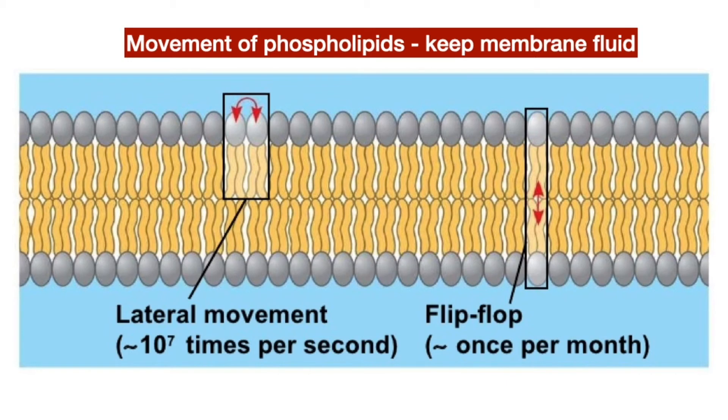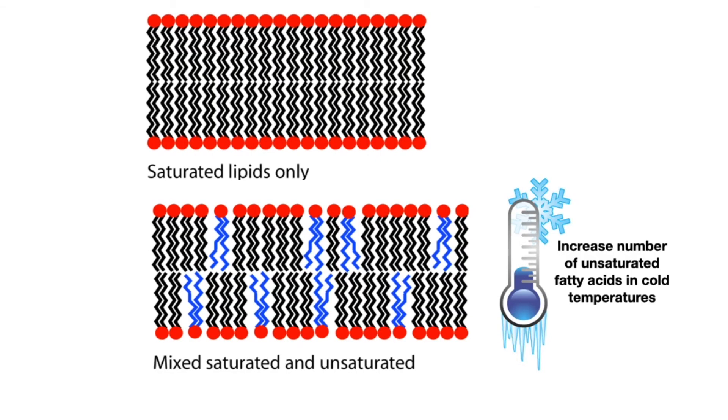They move rapidly and constantly past each other in a form of lateral movement, and also very occasionally they flip-flop with their bilayer partners. A factor that leads to this fluidity is the nature of the phospholipids themselves. The ratio of saturated and unsaturated fatty acids within the phospholipids helps determine the fluidity of the membrane, especially at cold temperatures.